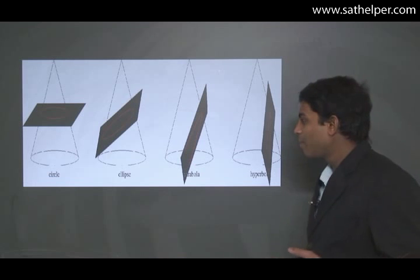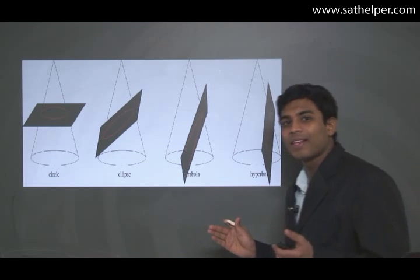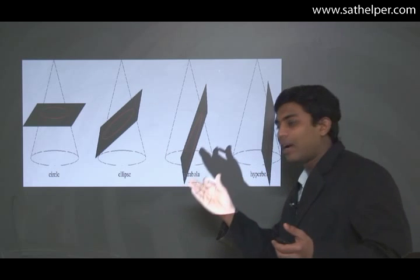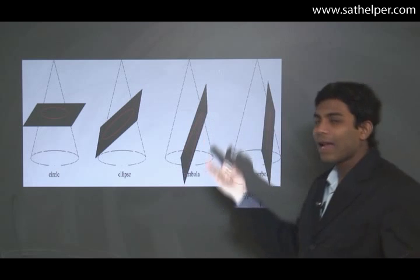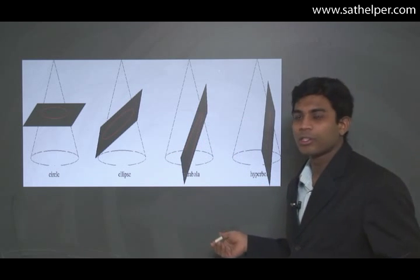As we discussed last time, a conic section is nothing but take a cone and if you take a hyperplane and cut through it in different angles, orientations, then what you get are conic sections.